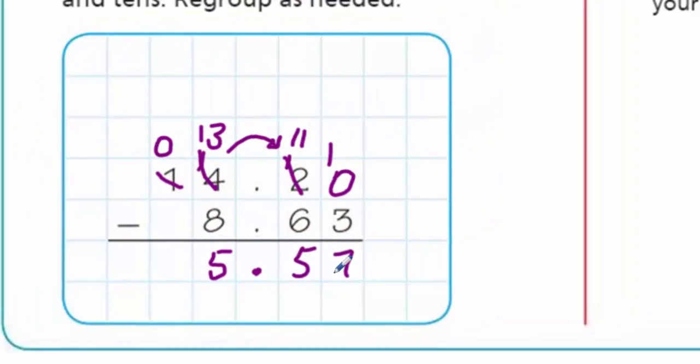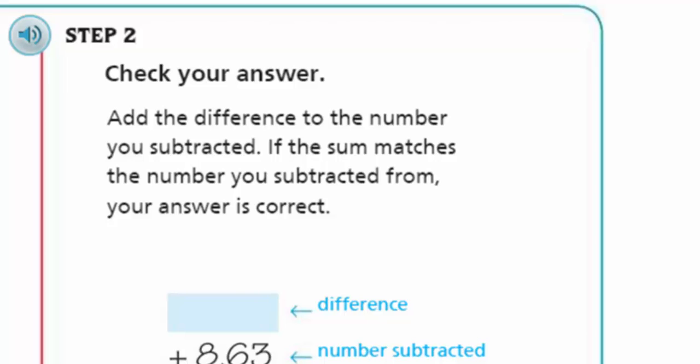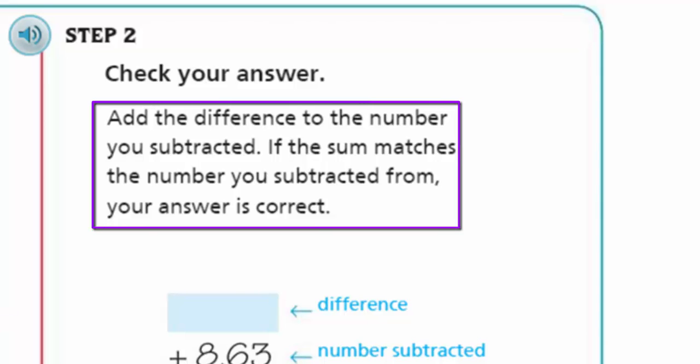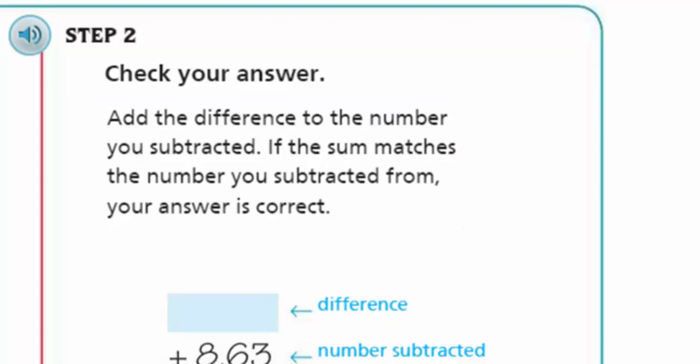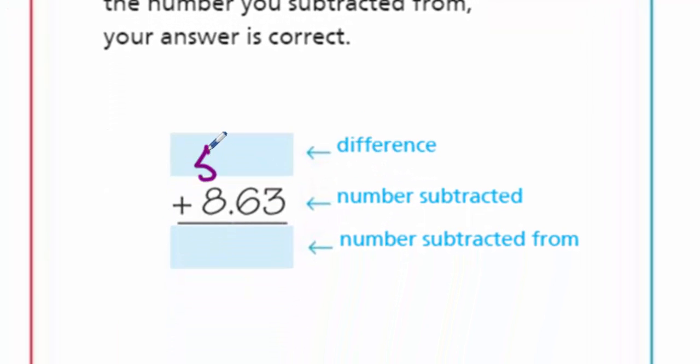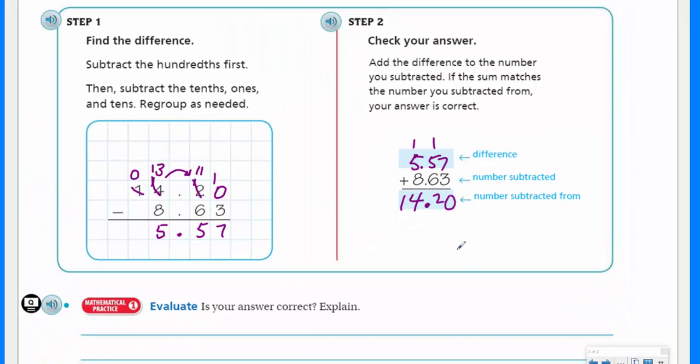Step two says check your answer. I'm going to add the difference to the number you subtracted. If the sum matches the number you subtracted from, your answer is correct. The difference was 5.57 hundredths, so I need to write that in. The number subtracted was 8.63 hundredths, and we'll see if it gets us back to where we were. Bring the decimal down. Now I'm adding, there's my ten, carry the one, that's eleven, that's twelve, carry the one, thirteen, and we get fourteen. Fourteen and twenty hundredths. Is that correct? Yeah it is!